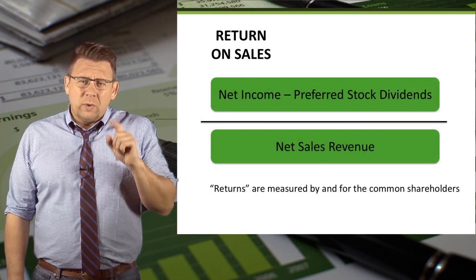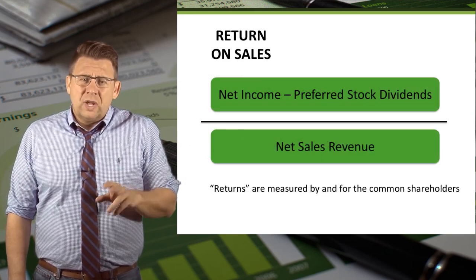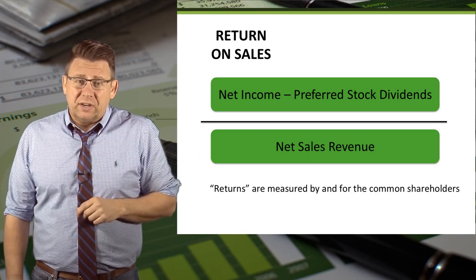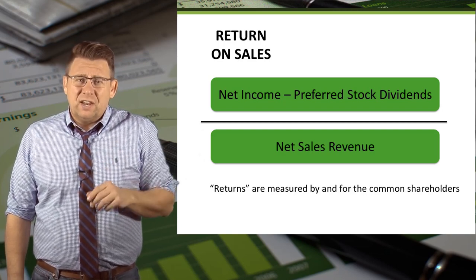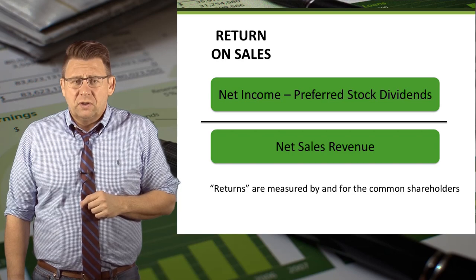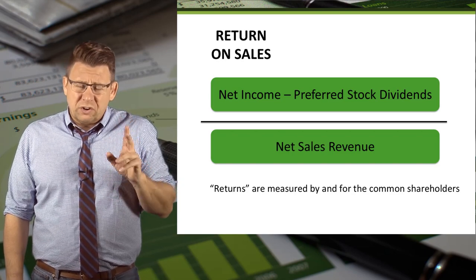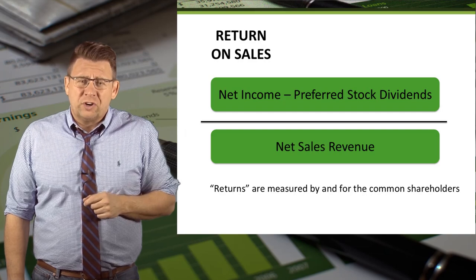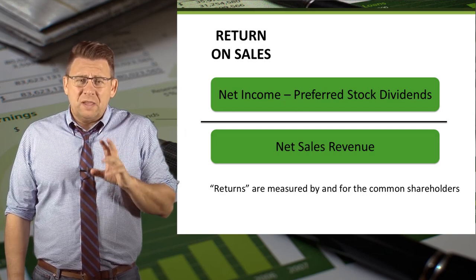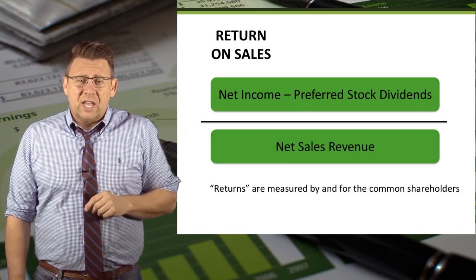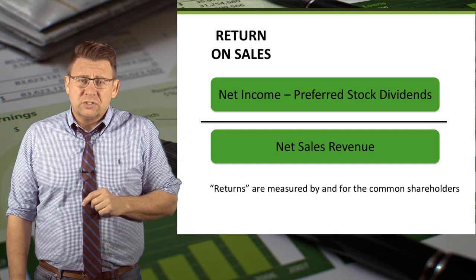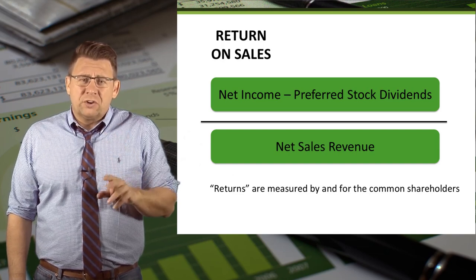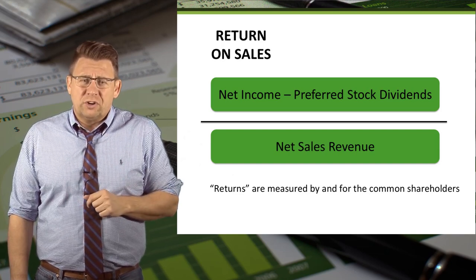A better way to calculate return on sales is to take net income minus preferred stock dividends and then divide that by net sales revenue. This is because returns are calculated by and for the common shareholder, so deducting the amount of net income that goes to the preferred shareholders gives a better view of the return on sales for the common shareholder.